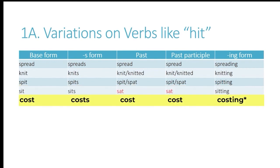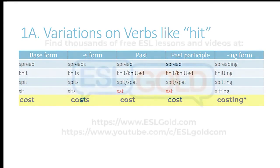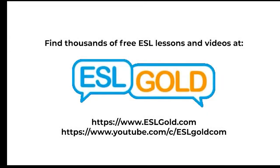The last one, cost, follows the same pattern as the others — cost, cost, cost — but there's something different with the ing form. Cost is what we call a non-action verb. That means we don't normally use this with the ing form. For example, you would not say 'that is costing $5.'